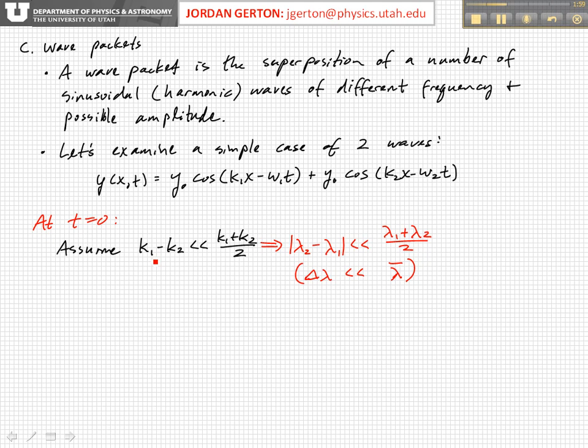Okay, so in this case, if we assume that the difference in the wave numbers between the two waves, k1 minus k2, is much much less than the average wave number, or equivalently, that the difference in the two wavelengths of the two waves is much much less than the average of the two wavelengths.